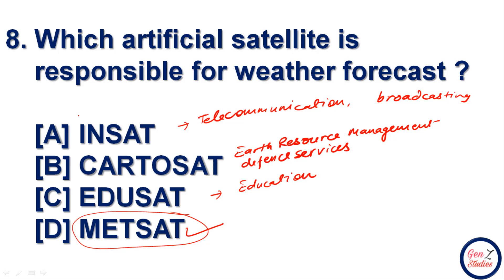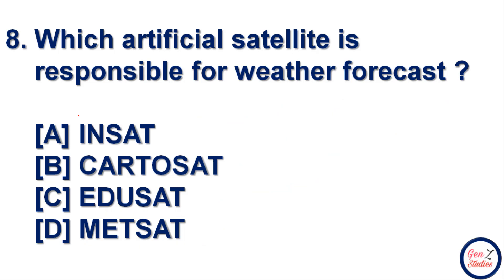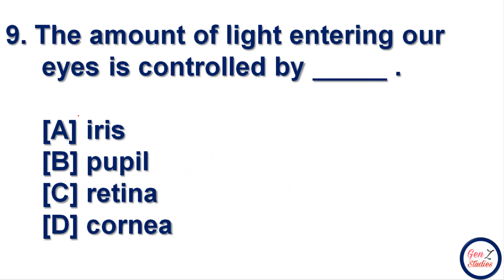Next question: the amount of light entering our eyes is controlled by which part? Options are iris, pupil, retina, or cornea. The correct answer is pupil — pupil controls the amount of light entering our eyes.